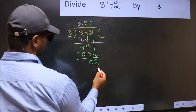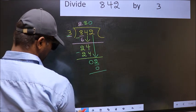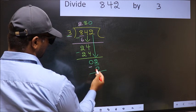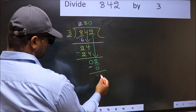So 3 into 0 is 0. Now you should subtract. 2 minus 0 is 2.